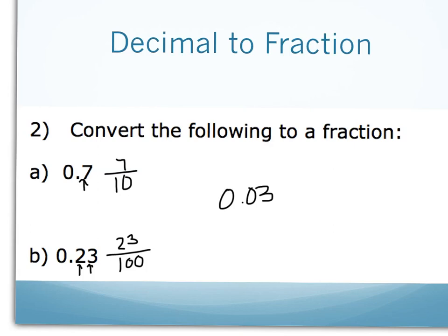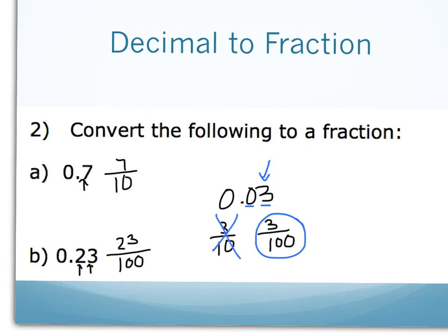Watch for this common error. What fraction is represented by the decimal zero point zero three? Is it three tenths or three hundredths? That three is in the hundredths place, because we have the tenths place first and then the hundredths. So the answer is three hundredths, not three tenths.